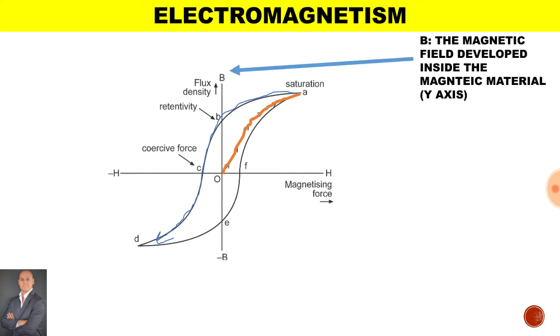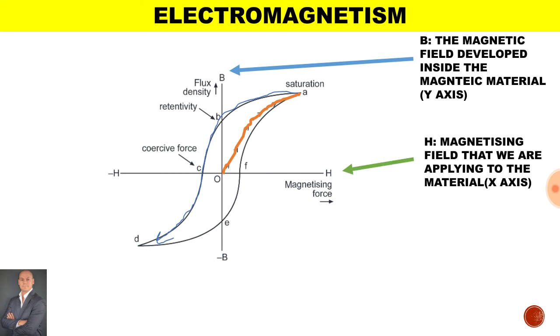Now the hysteresis loop, if we take a look at B on this illustration, which falls on the y-axis, it represents the magnetic field developed inside the magnetic material. Now on the x-axis represented by H, it is the magnetic field that we are applying to the material.